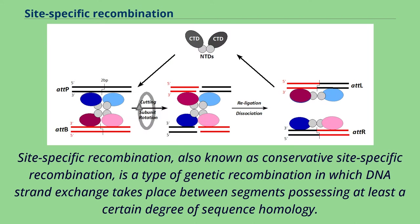Site-specific recombination, also known as conservative site-specific recombination, is a type of genetic recombination in which DNA strand exchange takes place between segments possessing at least a certain degree of sequence homology.